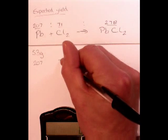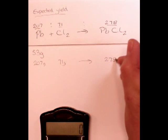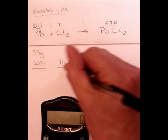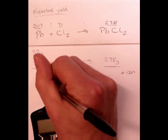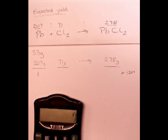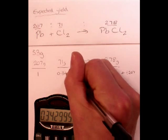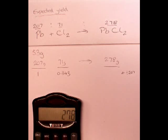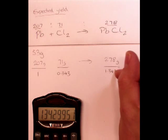Now, this is how I would do that. We'll start off with our known ratio, 207 of Pb, 71 grams of Cl2, will give me 278 grams of PbCl2. And I'm going to divide everything by 207. So, 207 divided by 207 will equal 1. Then, 71 divided by 207 equals 0.343. We'll round that up to three figures. And 278 divided by 207 equals 1.343.